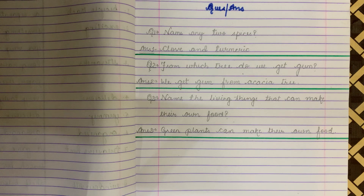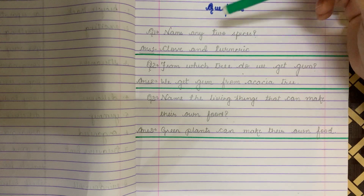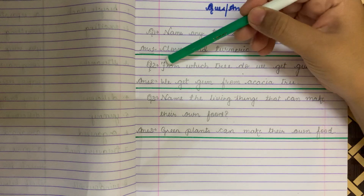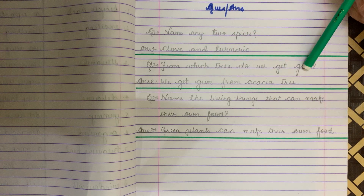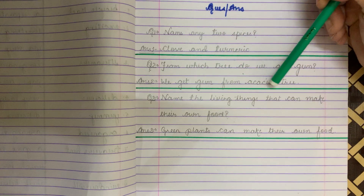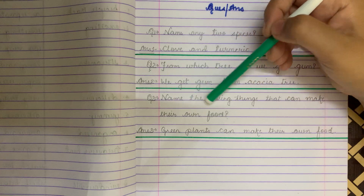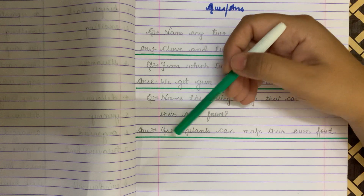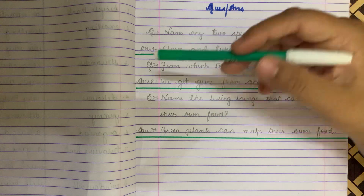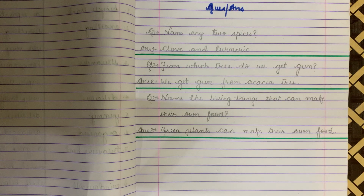That's all for today, children. We have done three question answers. The remaining question answers we will do on Tuesday. Let's repeat once more: Name any two spices — clove and turmeric. From which tree do we get gum? — We get gum from an acacia tree. Name the living things that can make their own food — Green plants can make their own food. You have to do this work beautifully and neatly in your notebook with cursive handwriting, and submit your notebooks in school on Friday or Saturday for checking. Bye bye.